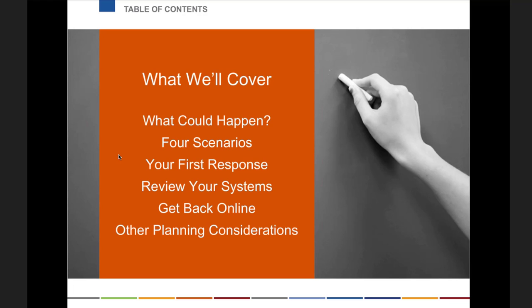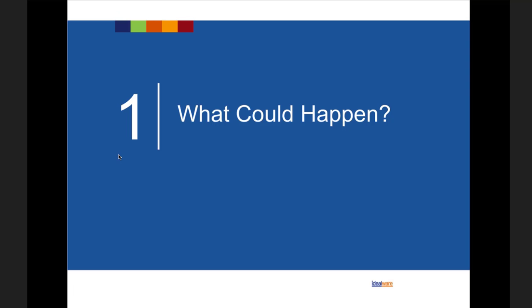What we're going to cover today: scenario planning — what could happen. Thinking about bad things and learning to be unafraid to consider them; I think people don't want to think about bad things and then they're not prepared. We're going to talk about four basic scenarios, thinking about the initial response — invoking your disaster plan and officially declaring it's starting — reviewing your systems, the priority and order of getting things back online, and other planning considerations. We've got 90 minutes allotted, so I really do encourage questions.